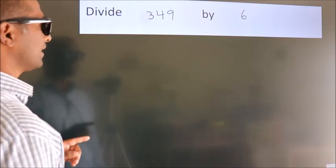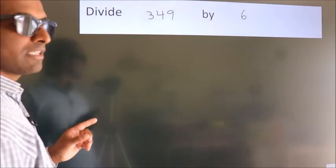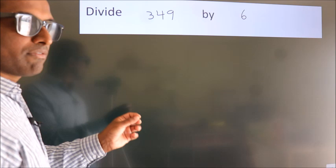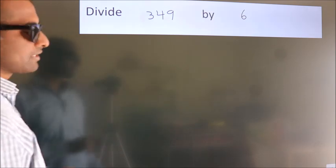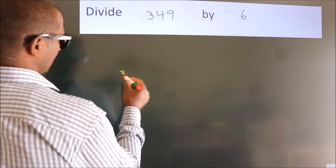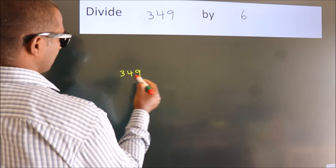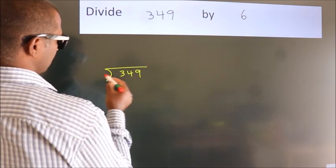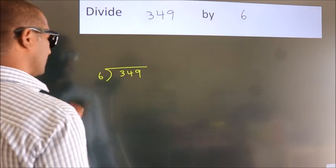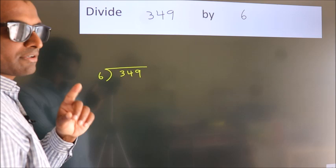Divide 349 by 6. To do this division, we should frame it in this way. 349 here, 6 here. This is your step 1.